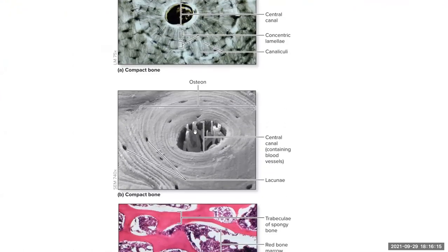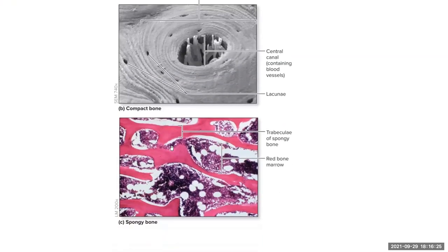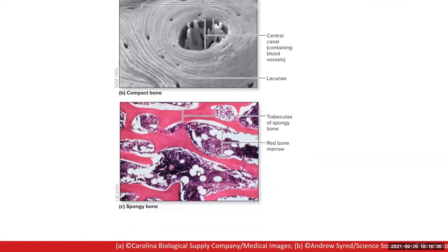Zooming in with an electron microscope, you can see blood vessels and nerves inside the central canal. In the spongy bone image, you can see the trabeculae — the scaffolding or lattice work — creating spaces in between where red bone marrow is located.